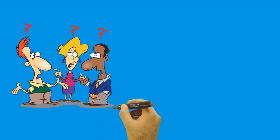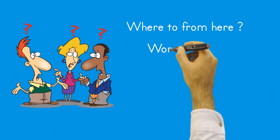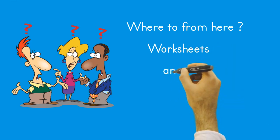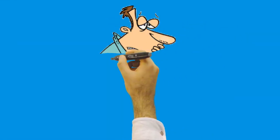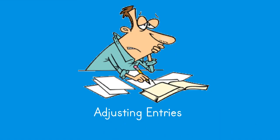Where to go from here: worksheets and financial statements. Let's discuss what types of transactions are normally recorded in the general journal. At the end of an accounting period — month or year — account balances are brought up to date with general journal entries called adjusting entries. An adjusting journal entry is an entry in a company's general ledger at the end of an accounting period to correct any errors and record any unrecognized income or expenses for the period.